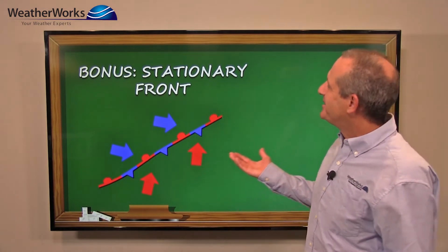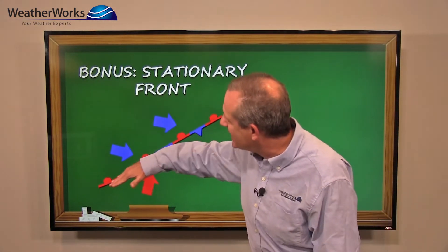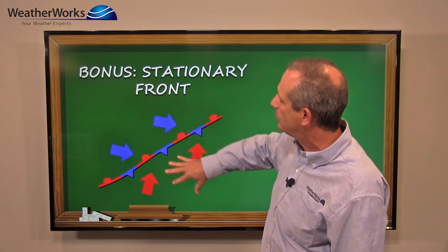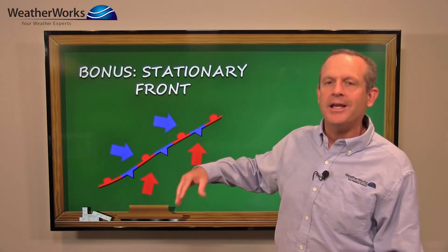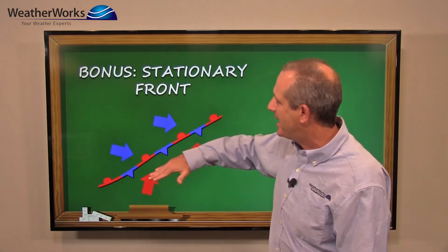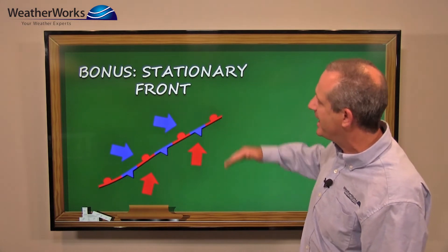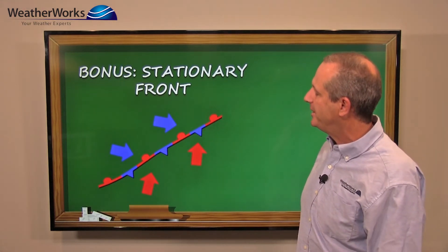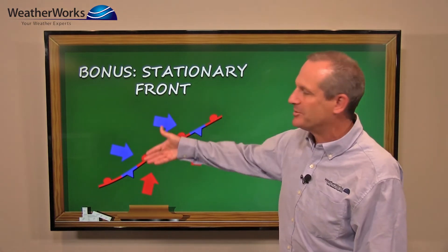Also, we do have what's called a bonus stationary front, and same idea, cooler air on one side, warmer air on the other side of the front. Usually it's not moving all that much. Sometimes it may waver a little bit throughout the day or into the overnight period, but usually it doesn't move all that much.